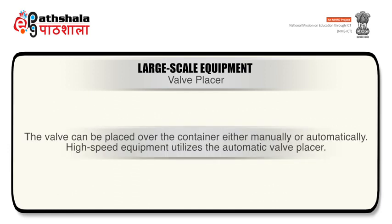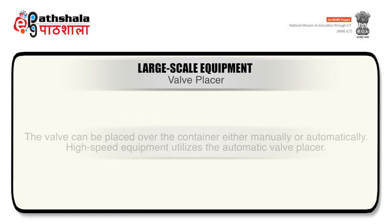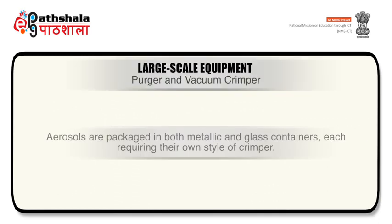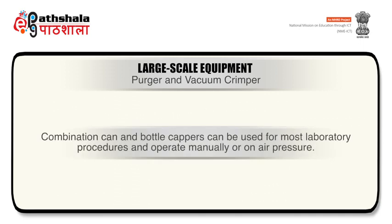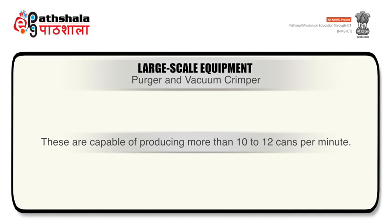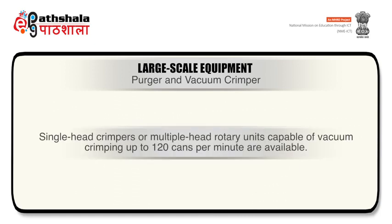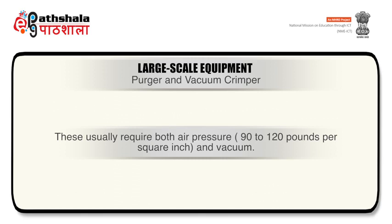Valves can be placed over the container either manually or automatically. High speed equipment makes use of automatic valve placer which orients the valve and places it in position prior to crimping operation. Aerosols are packaged in both metallic and glass containers, each requiring their own style of crimper. Combination can and bottle cappers can be used for most lab procedures and operate manually or on air pressure. These are capable of producing more than 10 to 12 cans per minute. Most crimpers serve dual function: to evacuate the air within the container to about 24 inches of mercury and then sealing the valve in place. Single head crimpers or multiple head rotary units capable of vacuum crimping up to 120 cans per minute are available.